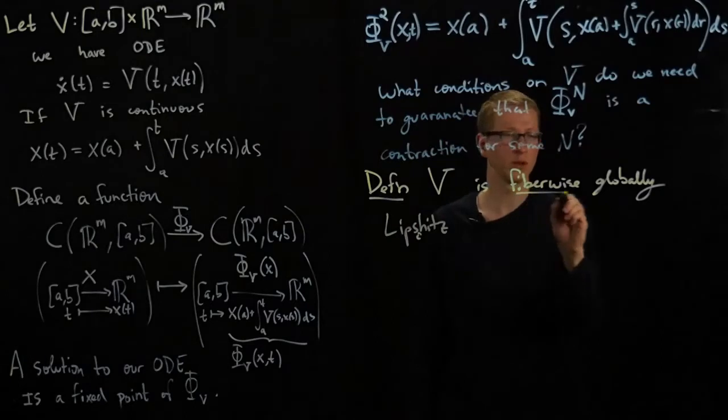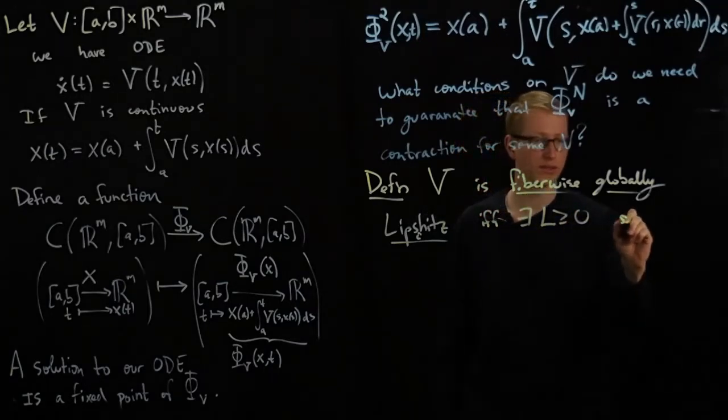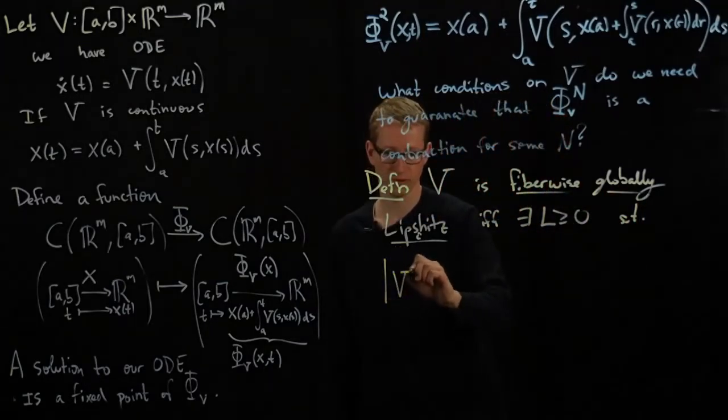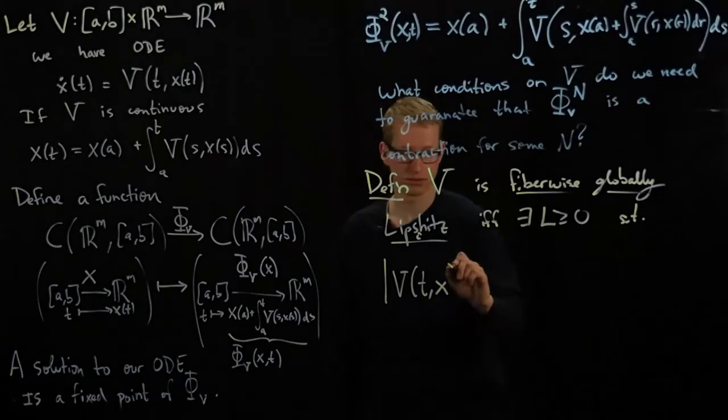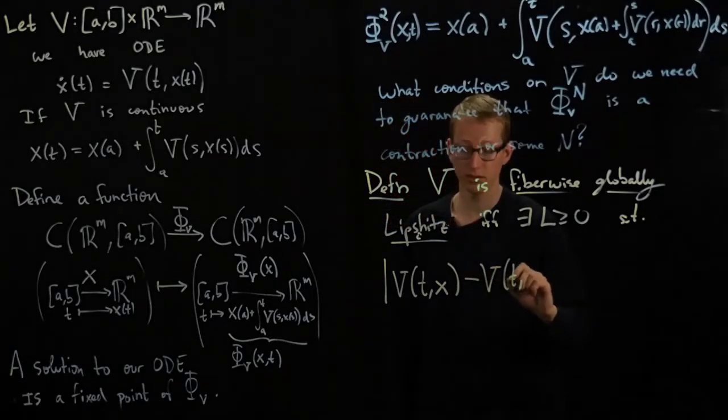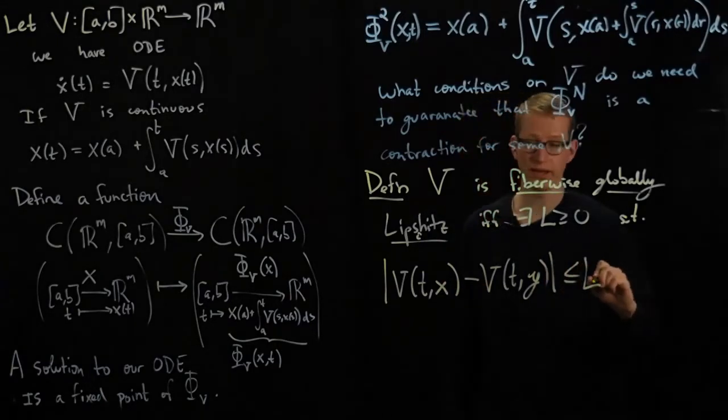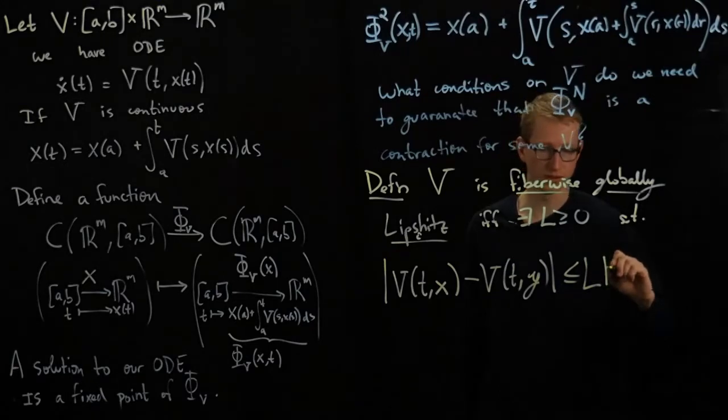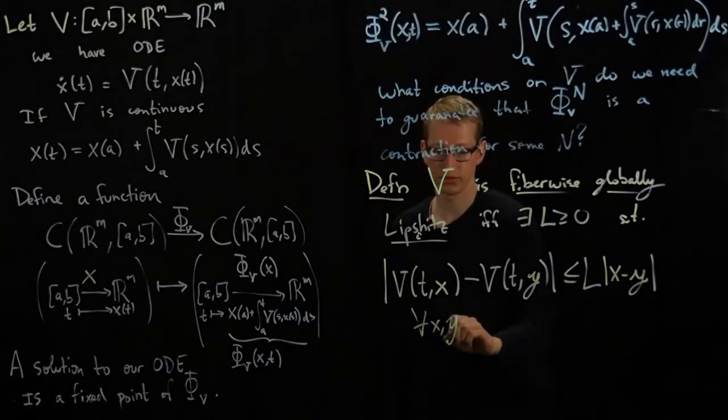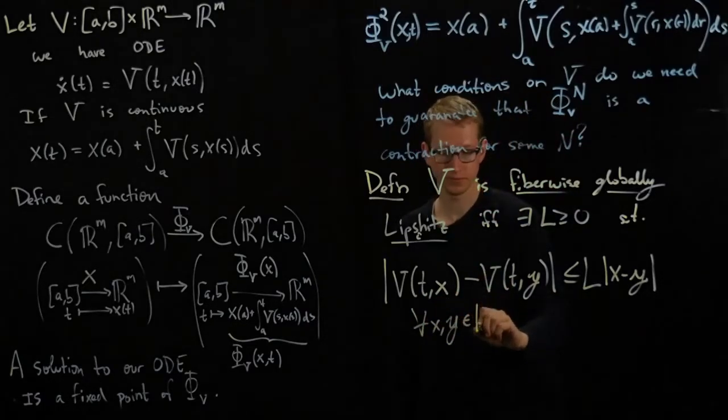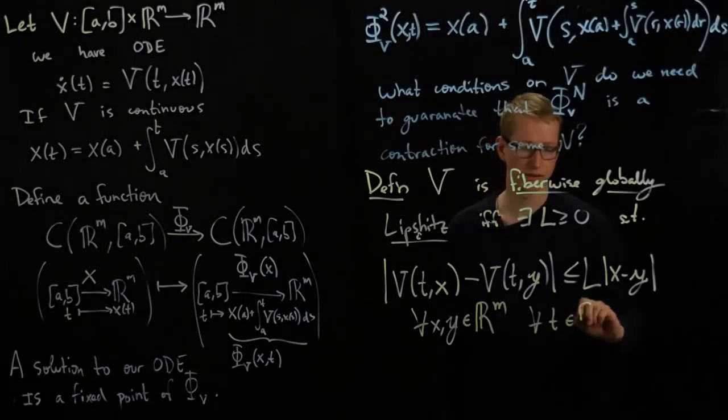V as above is said to be fiberwise globally Lipschitz if and only if there exists some number L greater than or equal to 0 such that |V(t,x) - V(t,y)| ≤ L|x - y| for all x and y in R^m and for all t on the interval [A,B].